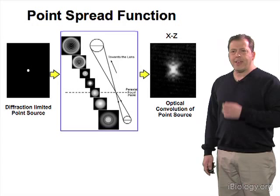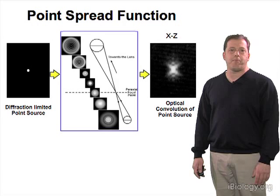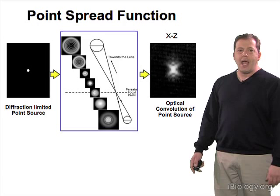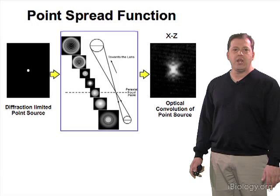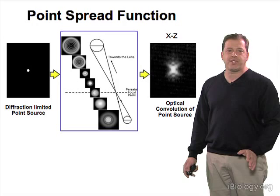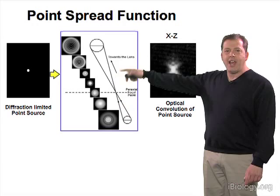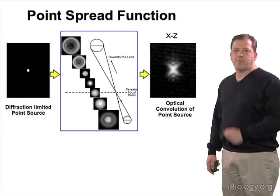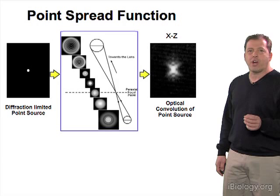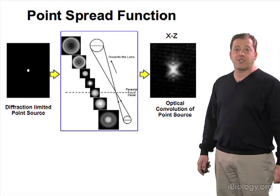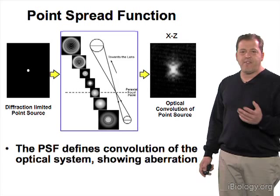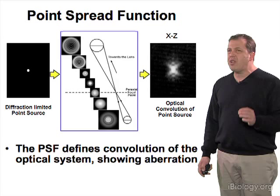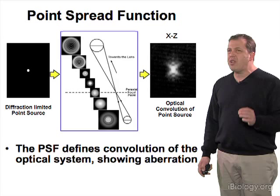An important concept for all discussions on aberrations is the point spread function. Basically, the point spread function is the convolution of a point source of light as it passes through the optical system. If you focus up and down and build a 3D volume, the XZ projection looks like a small hourglass — that's the best case scenario when the optical system is working perfectly. It defines the convolution of the optical system and is a really good way to evaluate any aberrations in the microscope, generally shown as a 3D XZ projection.